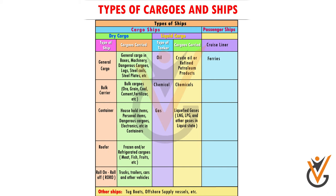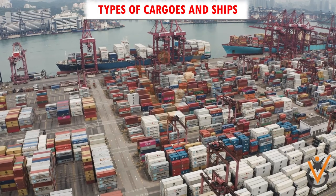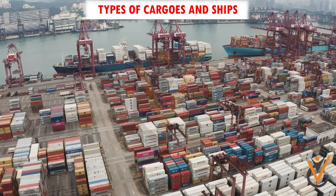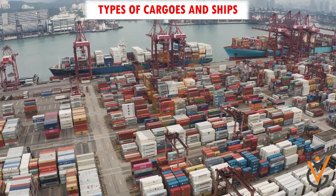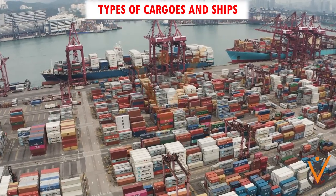This division is shown in the chart below. Passenger ships are further sub-divided into cruise liners and ferries. There are also other types of ships, namely offshore supply vessels and tugboats. Ships transport cargoes and/or carry passengers for hire.